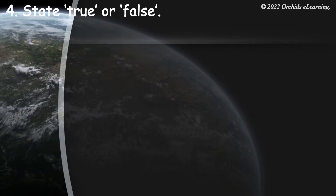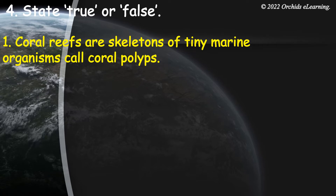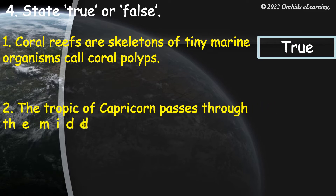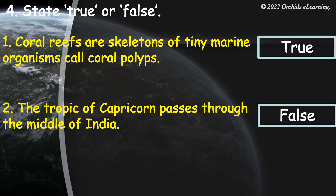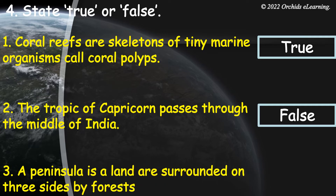True or False. Coral reefs are skeletons of tiny marine organisms called coral polyps — True. The Tropic of Capricorn passes through the middle of India — False. A peninsula is a landmass surrounded on three sides by forests — False.